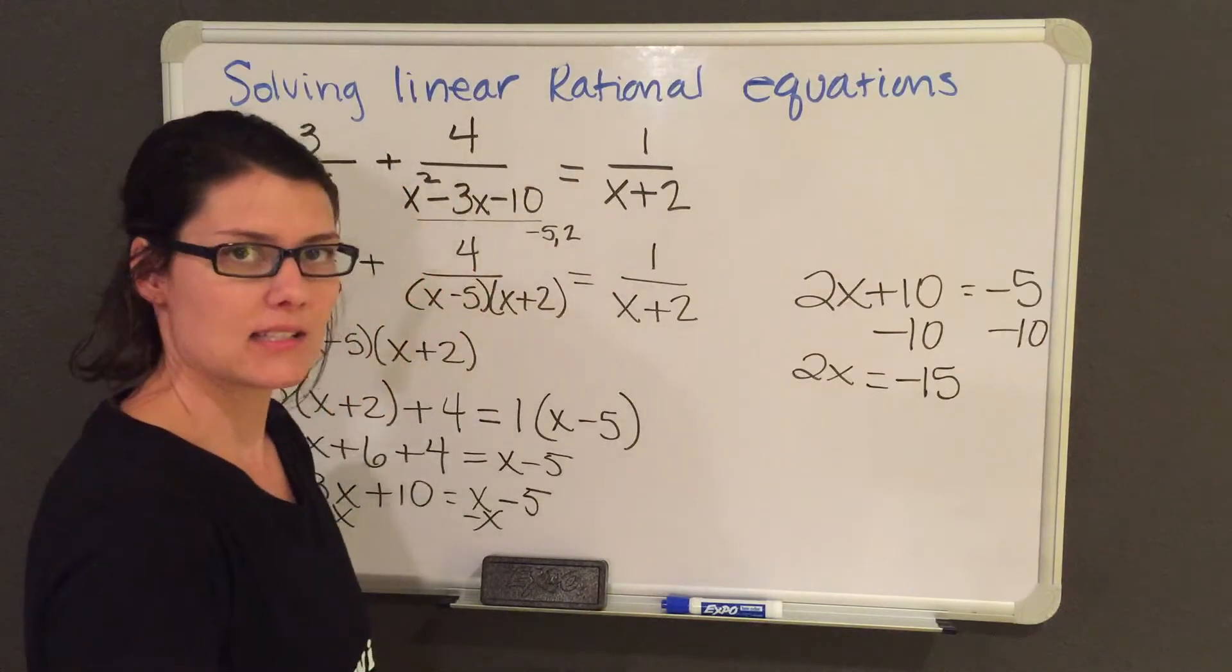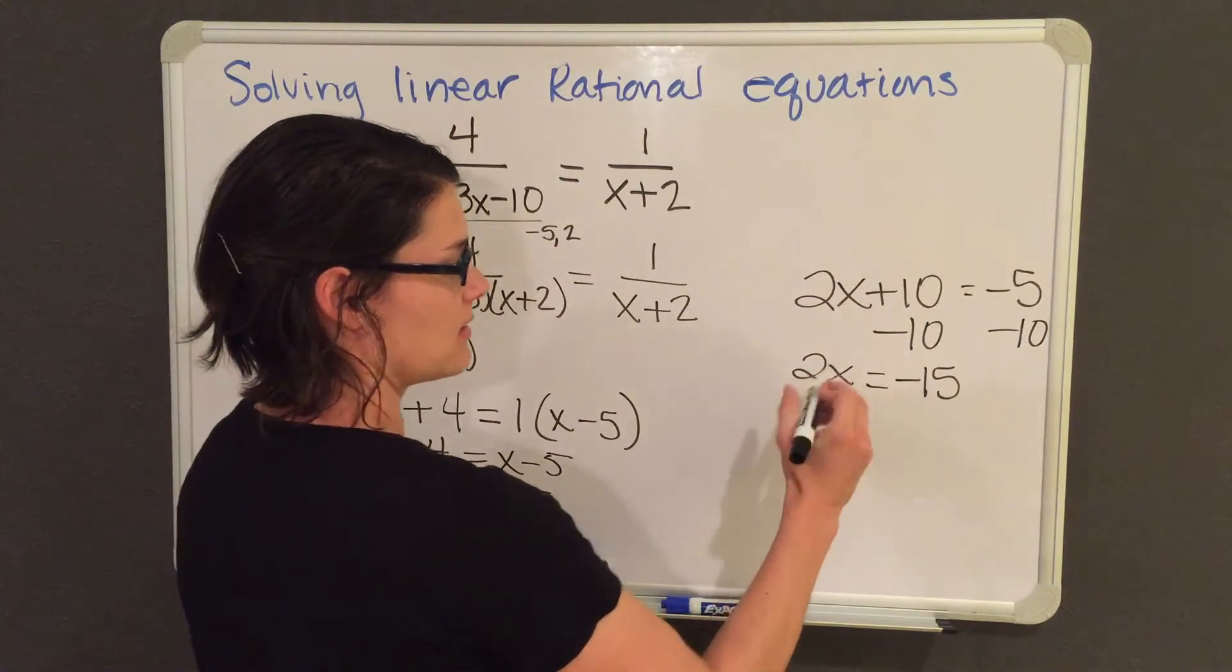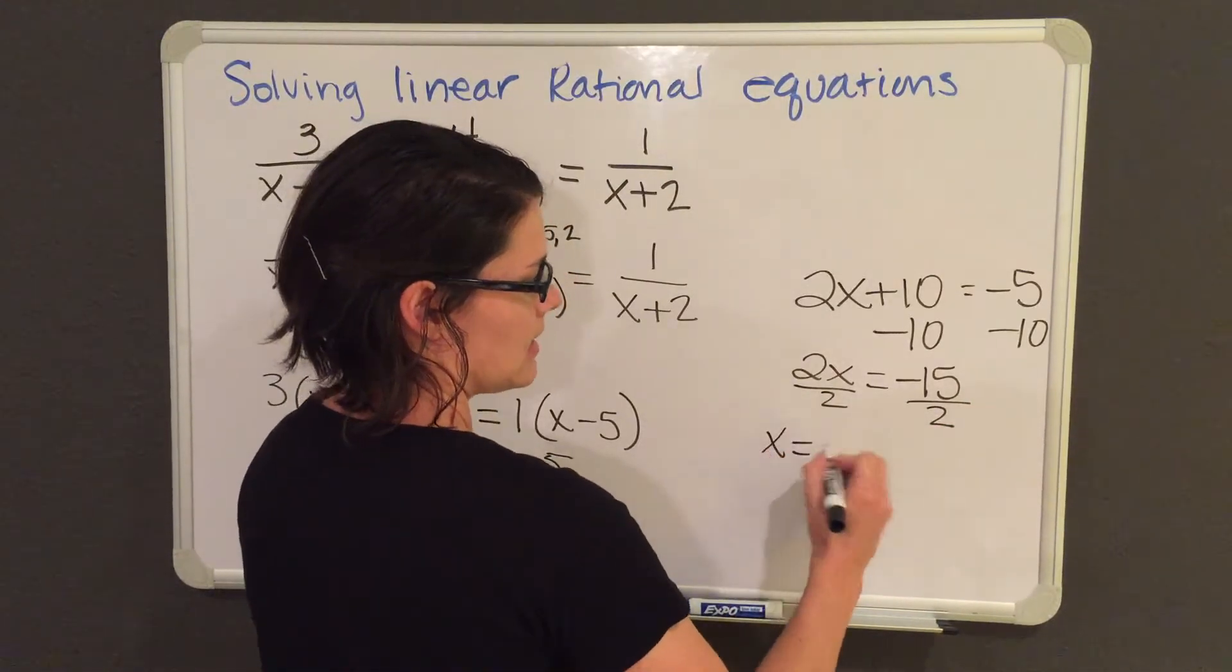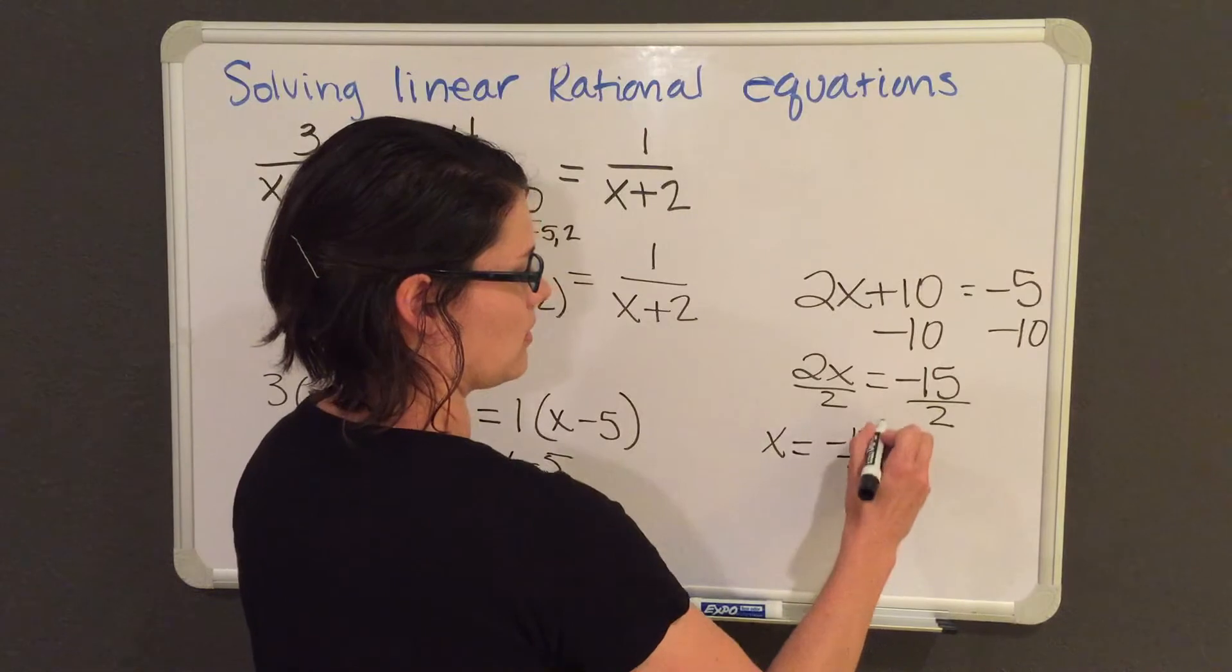And then my last step is to solve for x by dividing both sides by 2. And I get x equals negative 15 over 2.